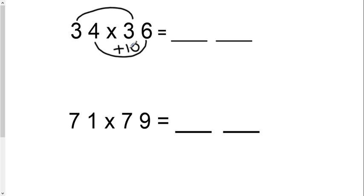Your answer is going to have two parts. The first part is going to be the last digit times the last digit, so 4 times 6 is 24.